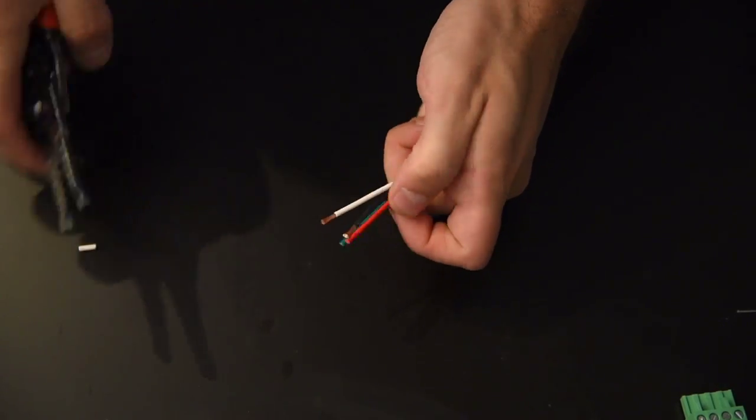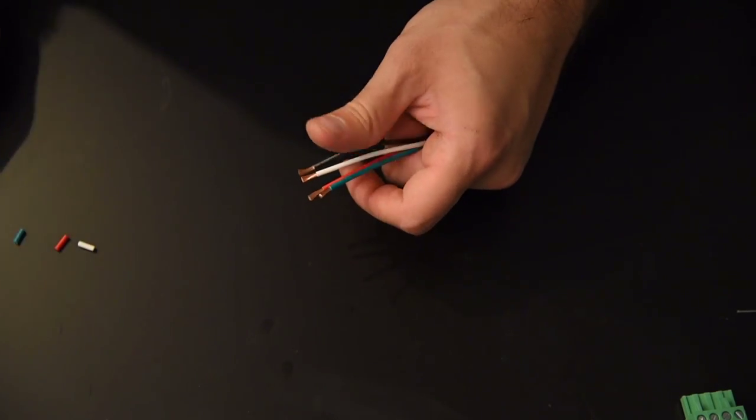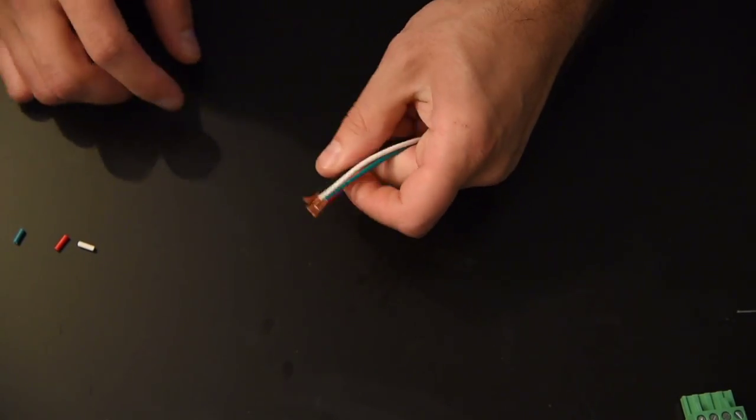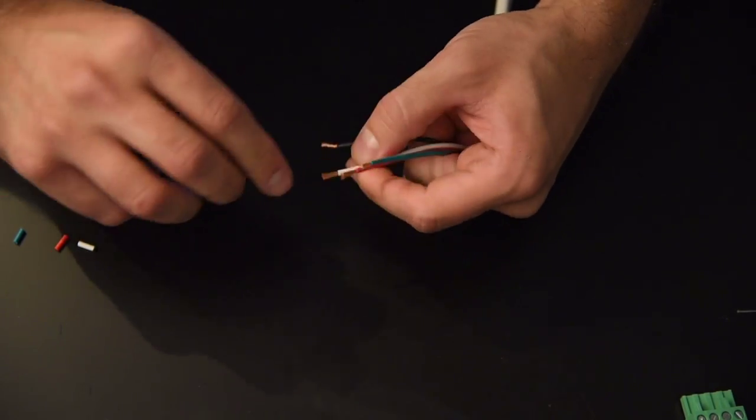I'm just going to do that for all four of these. It doesn't have to be exact, but you do just want to take off just a little bit off the end. And then you want to twist all these ends so that the tip doesn't fray so much.